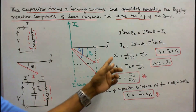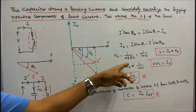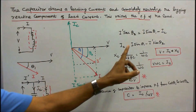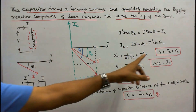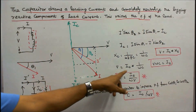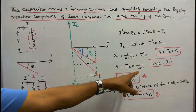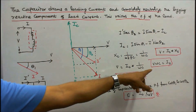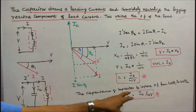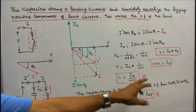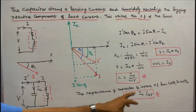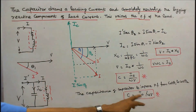We know that Xc equals 1 divided by 2 pi F C, and omega equals 2 pi F, so Xc equals 1 divided by omega C. Therefore, Ic equals V times omega C. The capacitance of the capacitor required to improve the power factor from cos theta 1 to cos theta 2 is: C equals Ic divided by omega times V.